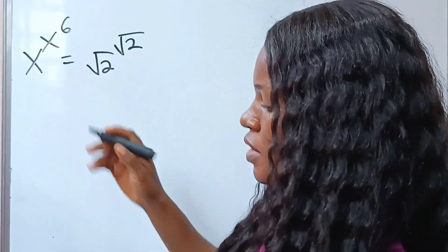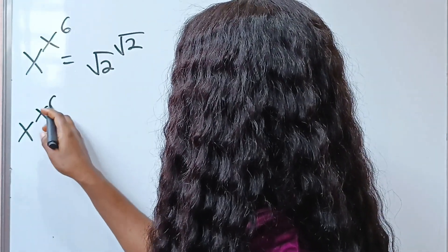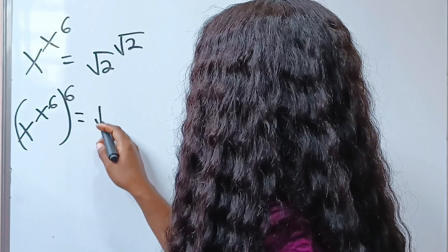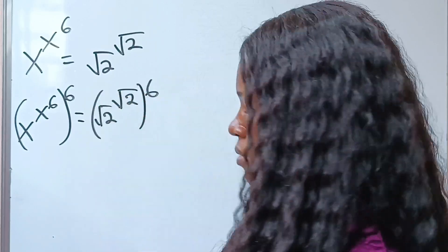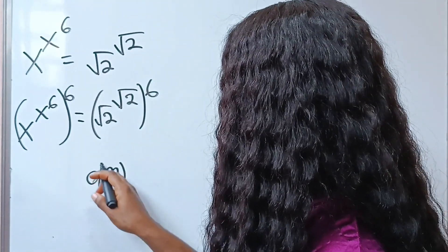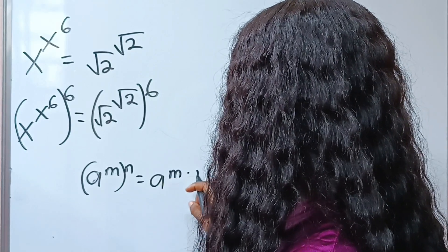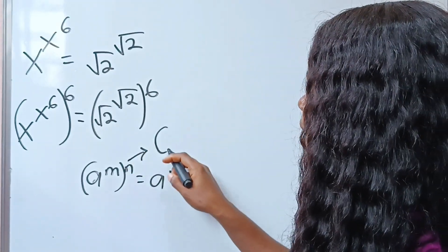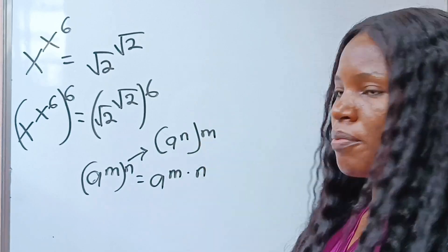I'm going to raise each side of this equation to the power of 6, so I will have x to the power of x to the power of 6, raised to the power of 6, equal to square root of 2 raised to the power of square root of 2, all raised to the power of 6. Now, where you have a to the power of m raised to the power of n, this equals a to the power of m multiplied by n. And you can interchange the powers — you can write this as a to the power of n raised to the power of m without changing the value.